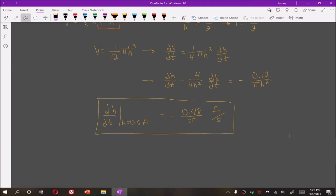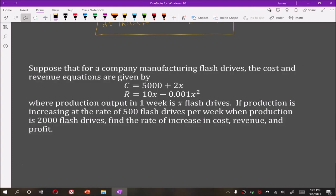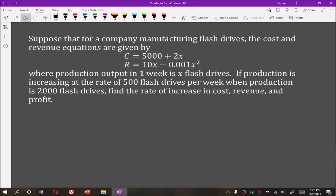As a final example, let's suppose that a company that manufactures flash drives has cost and revenue equations given where production output in one week is x flash drives. If production is increasing at the rate of 500 flash drives per week when production is 2000 flash drives, find the rate of increase in cost, revenue, and profit.